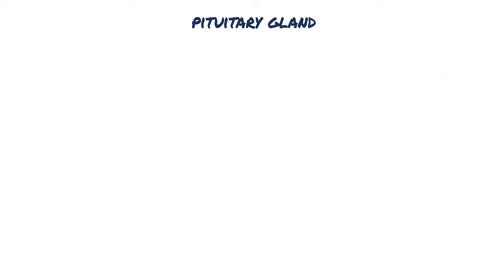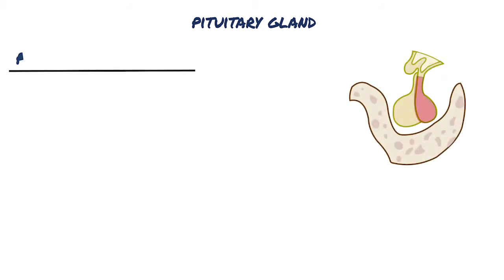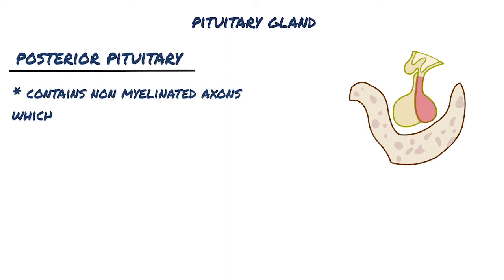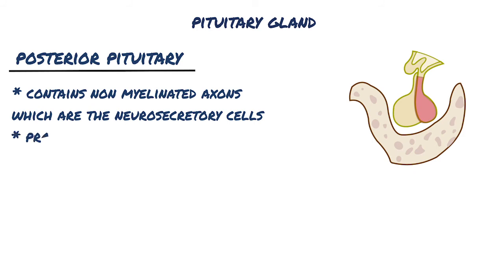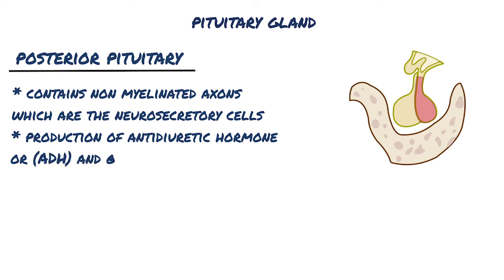Let's move on to the posterior pituitary. The posterior pituitary contains non-myelinated axons, which are the neurosecretory cells. The cell bodies of these cells are located in the hypothalamus. The secretory neurons have all the characteristics of typical neurons, including the ability to conduct an action potential, but have larger diameter axons and well-developed synthetic components related to the production of antidiuretic hormone (ADH) and oxytocin.